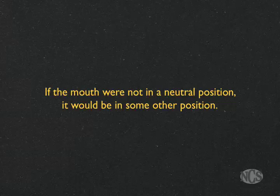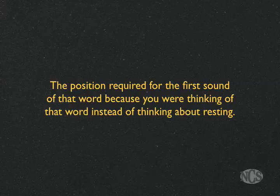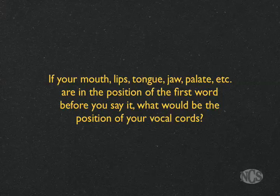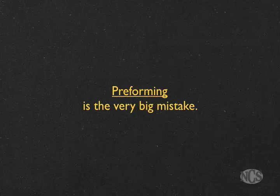If the mouth were not in a neutral position as the air was coming out, it would be in the position required for the first sound of that first word — because you were thinking of that word instead of thinking about resting. If your lips, tongue, jaw, and palate are in the position of the first word before you say it, your vocal cords would also be in the position of the first word — tensing your vocal cords before time zero. That's called preforming.